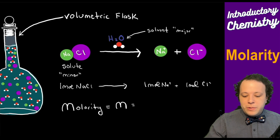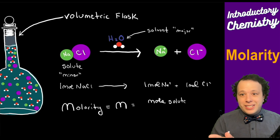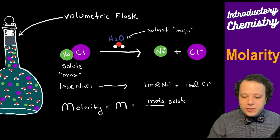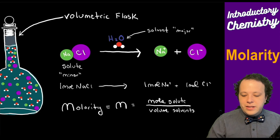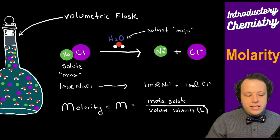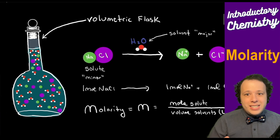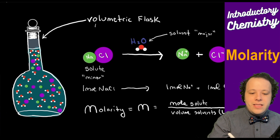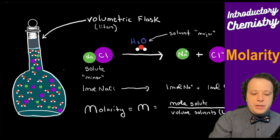Molarity is represented as moles of our solute over the volume of our solvent — moles over volume. Being that this is a volume, it has to be in liters. So if we have our volumetric flask, that's going to be in liters, whereas our solute is going to be in moles.